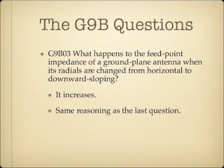What happens to the feed point impedance of a ground plane antenna when its radials are changed from horizontal to downward sloping? The impedance increases, and it's the same rationale as the last question. As the radials of a ground plane antenna are sloped downwards, the impedance increases.